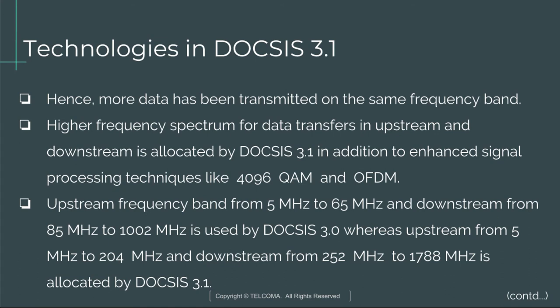DOCSIS 3.0 uses an upstream frequency band from 5 MHz to 65 MHz and downstream from 85 MHz to 1002 MHz, whereas DOCSIS 3.1 allocates upstream from 5 MHz to 204 MHz and downstream from 252 MHz to 1788 MHz.